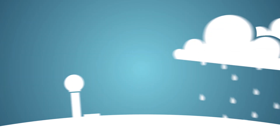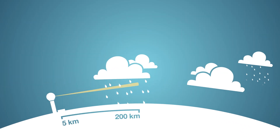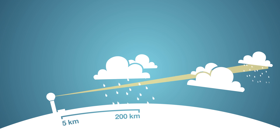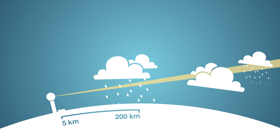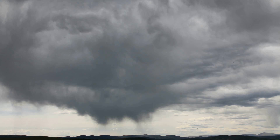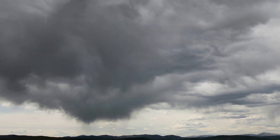There are some limitations to radars. The curvature of the earth means that the optimal range is between five and two hundred kilometres. Beyond two hundred kilometres, the radar might be showing rain that's falling high in the atmosphere and this might not represent what's actually happening on the ground. And even in the optimal range, sometimes the radar can show virga, which is rain that's falling but evaporating before it hits the ground.